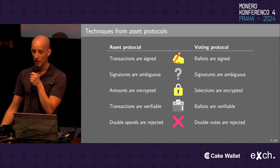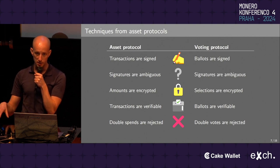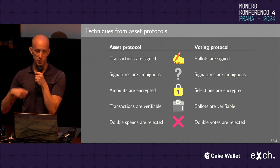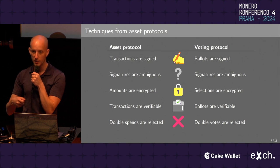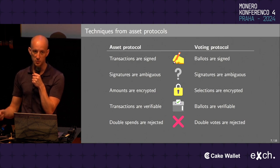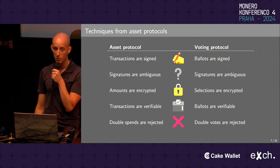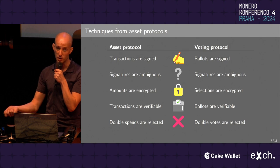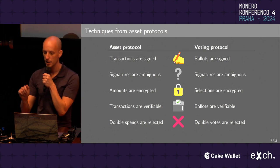Finally, in a digital asset protocol we want to reject double spends — if I try to spend funds in one transaction and again in another, that double spend is rejected, otherwise we've created money out of thin air. Similarly, we typically want to reject double votes, but I'll have more to say about that later.